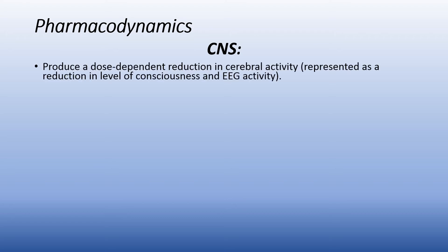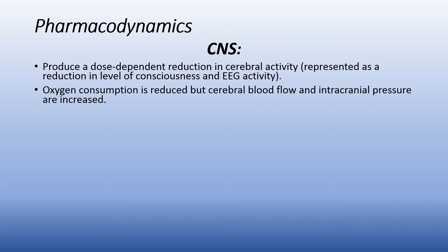Regarding pharmacodynamics and the effect on the CNS: these agents produce a dose-dependent reduction in cerebral activity, represented as a reduction in the level of consciousness and EEG activity — that is, loss of consciousness. Oxygen consumption is reduced by the central nervous system, but cerebral blood flow is increased, and so intracranial pressure is increased. This is because when we increase cerebral blood flow to the brain, which is a confined space within the skull, the intracranial pressure will then increase.